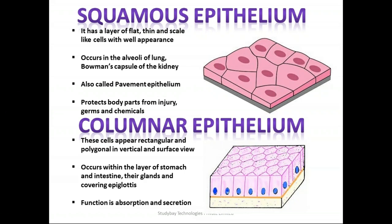Next we have columnar epithelium. These cells appear rectangular in vertical view and polygonal in surface view — meaning the front view looks like a rectangular structure and the top view looks like a polygon. This occurs within the layer of the stomach and intestine. They are found in glands and covering the glottis. The function is absorption and secretion.